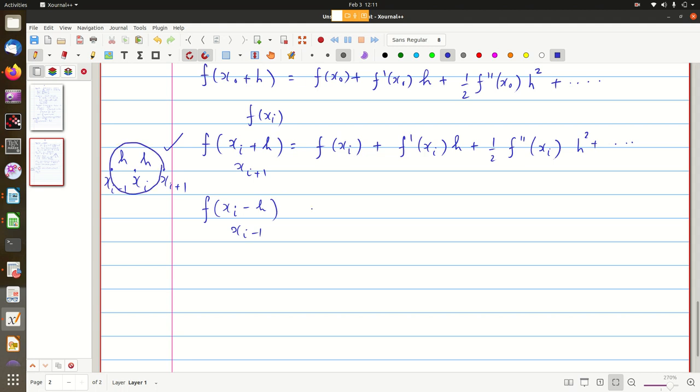Okay, so I can also use the f of xi values to calculate the value at f of xi minus 1, which is xi minus h. So in that case I will get f of xi minus... because now h is minus h, okay?